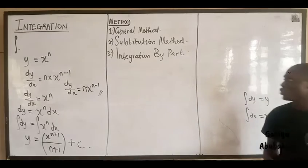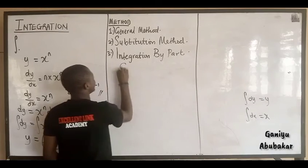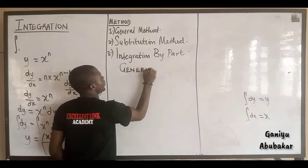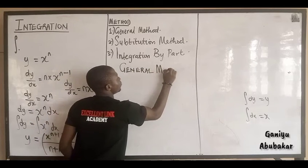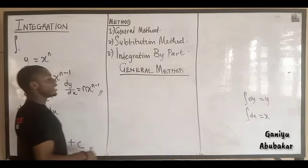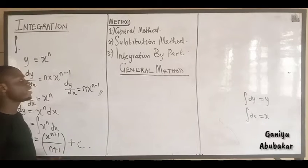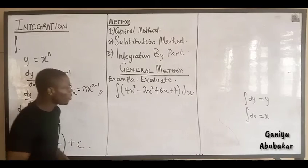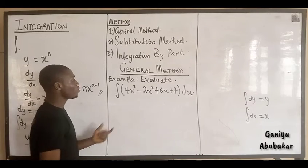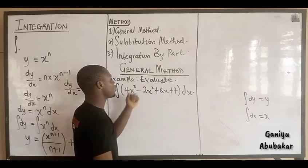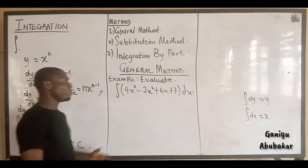Let's start with the first one called the general method. Let's take an example and work through it together. We are to evaluate the integral of 4x cubed minus 2x squared plus 6x plus 7 dx.